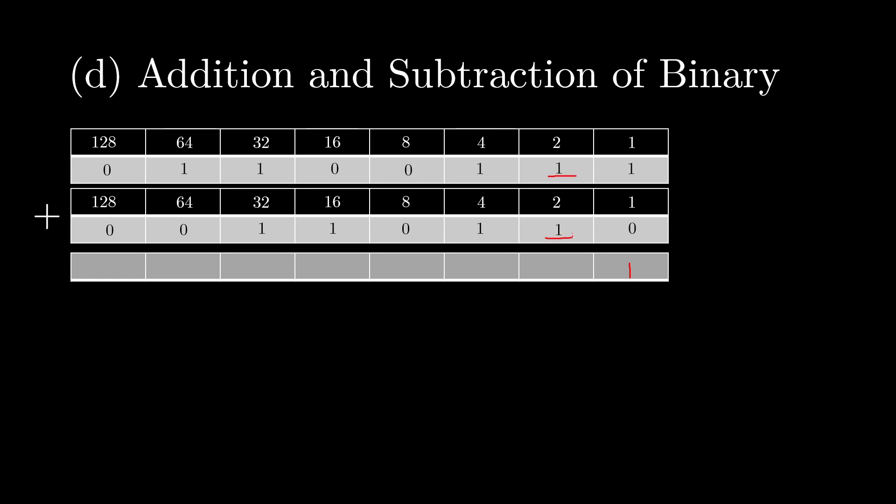So these two 1s, which represent 2, add up to make 1 four. So we carry a 1 over to there, and this will just be 0. Then we have 3 ones here, so this will just be 1, and then we carry a 1. Then 1 plus 0 plus 0 equals 1. 0 plus 1 equals 1. Then 1 plus 1 means we carry a 1. This will be 0, and then we have to carry another 1. And that will just be 1 there.